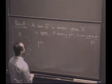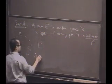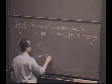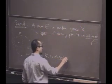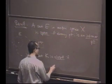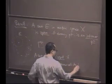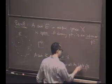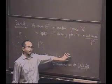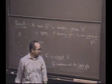What does it mean for a set to be closed? A set K is closed if it contains all of its limit points. This is the definition: K is closed precisely when K contains all of its limit points.